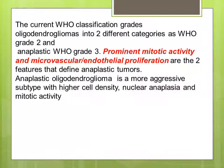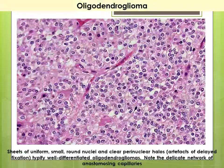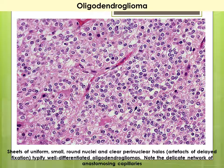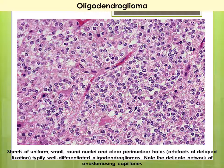The current WHO classification divides oligodendrogliomas into two forms: WHO grade 2 and anaplastic WHO grade 3, the latter having prominent mitotic activity and microvascular endothelial proliferation as defining features. Oligodendrogliomas may show highly dense nuclear anaplasia with mitotic activity. Microscopically, there are sheets of uniform cells with vesicular nuclei surrounded by a perinuclear halo, and a delicate network of anastomosing capillaries.